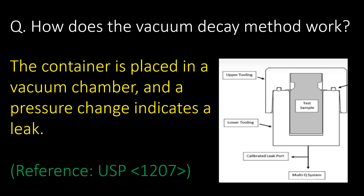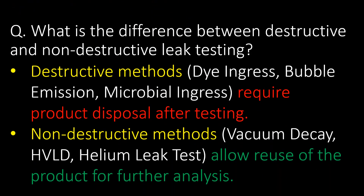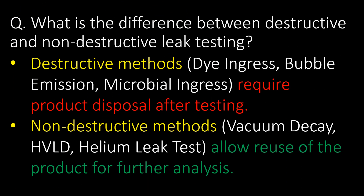How does the vacuum decay method work? The container is placed in a vacuum chamber and a pressure change indicates a leak. Reference: USP Chapter No. 1207.